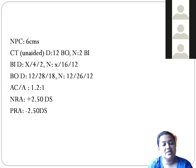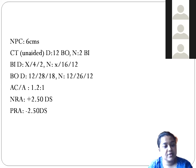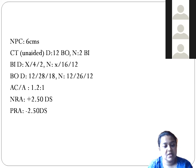The AC/A ratio of 1.2:1 confirms this is an insufficiency type condition. A normal to low AC/A ratio with greater distance esophoria than near deviation confirms clear-cut divergence insufficiency. The treatment approach should focus on training divergence.